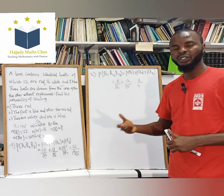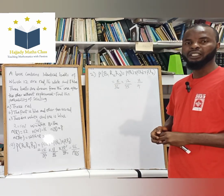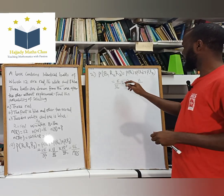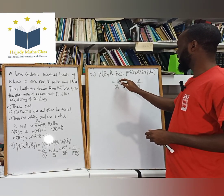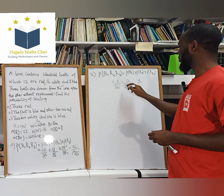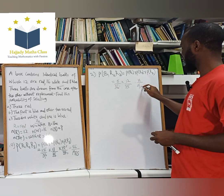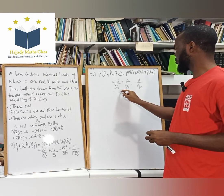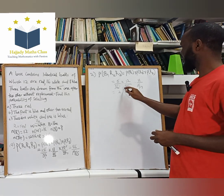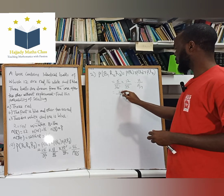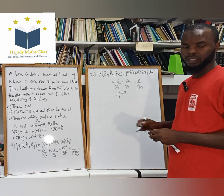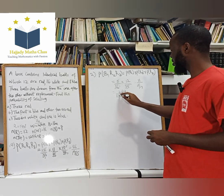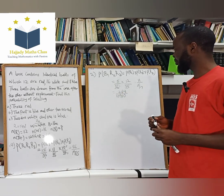So if you are not replacing, the total will keep decreasing. Doing the simplification, you get 2 over 164 over 1,710. You can use a calculator to confirm if this is correct.